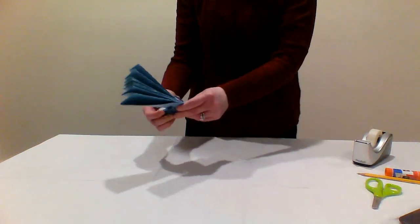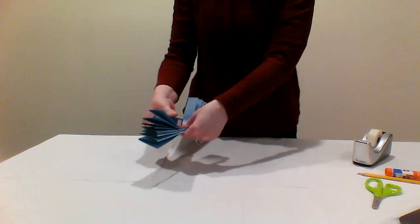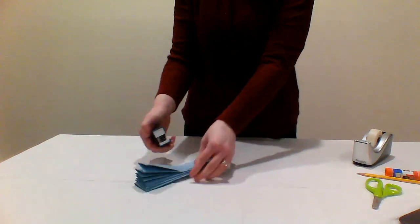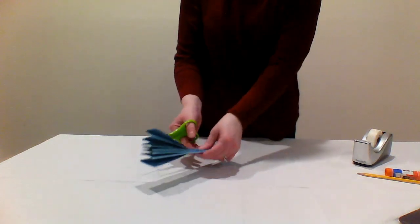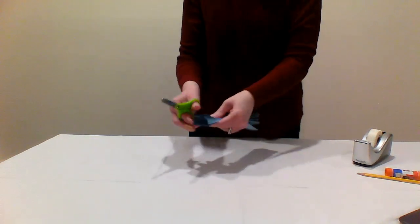Once you have folded the entire length of the paper, staple the center of the paper once. Using a scissor, cut both ends into an arrow shape trimming off the corners.